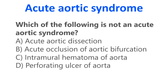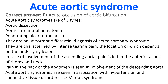Which of the following is not an acute aortic syndrome? A. Acute aortic dissection. B. Acute occlusion of aortic bifurcation. C. Intramural hematoma of aorta. D. Perforating ulcer of aorta. The correct answer is B: Acute occlusion of aortic bifurcation.